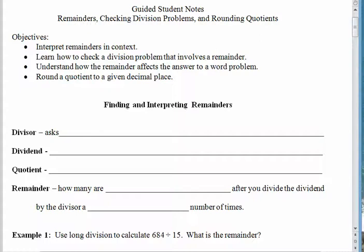So the first thing we want to do is to review what the vocabulary of division is. And you remember the divisor, the dividend, the quotient. The divisor, that's the number that is doing the dividing. So what the divisor is doing is it asks how many groups of this size can be made.